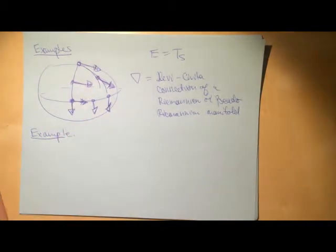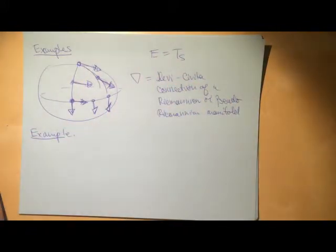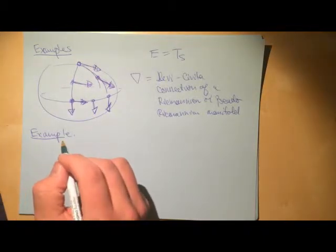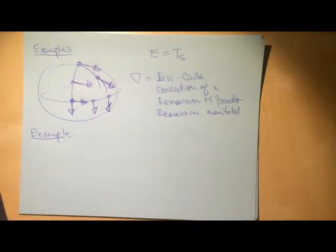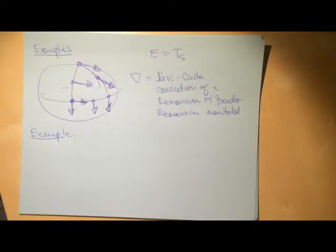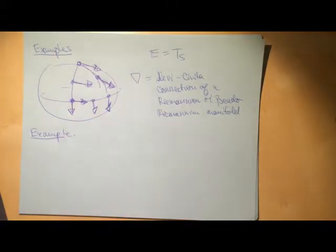If you look at vector-valued connections where E is not the tangent bundle, you can do more interesting things. In physics these are gauge theories. In math, examples include the Gauss-Manin connection, which is related to the Picard-Fuchs equations and Painlevé equations — fundamental equations that appear throughout the subject.